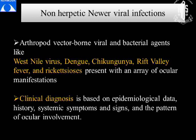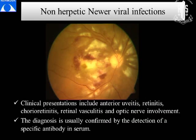Coming to the non-herpetic viral infections, we have the arthropod-borne, vector-borne, viral and bacterial agents — infections like West Nile virus, dengue, chikungunya, Rift Valley fever, and rickettsiosis. The clinical diagnosis in all these cases is based on epidemiological data, history, systemic symptoms and signs, and the pattern of ocular involvement. Most clinical presentations in all these arthropod-borne viral infections are anterior uveitis, retinitis, chorioretinitis, retinal vasculitis, or optic nerve involvement. Most often, diagnosis is confirmed by detection of specific antibody in the serum.